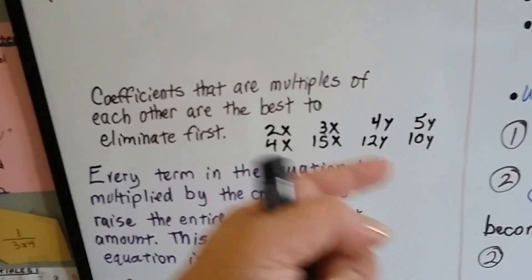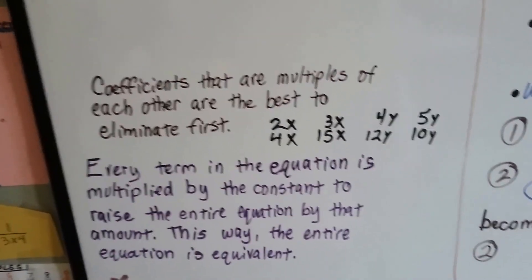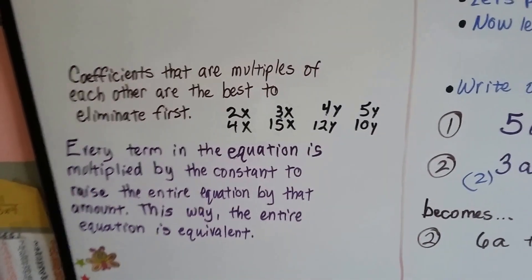So if these are the values in the equations, multiples are the best to eliminate first. Okay?